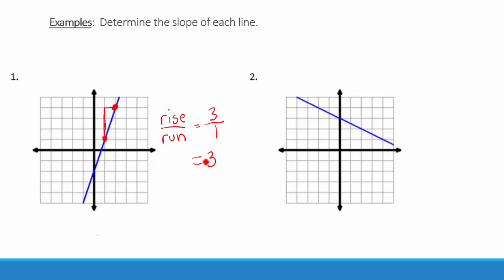In problem 2, we pick two points that fall on the crosshairs of the graph with integer values for their coordinates. We determine the rise over the run. Starting at point A, we draw a line vertically to the y-value of point B. The rise is negative 1 because we are going downhill. Then we draw a line horizontally for our run, which is positive 2. So our rise is negative 1 and our run is 2, giving us a slope of negative one-half.